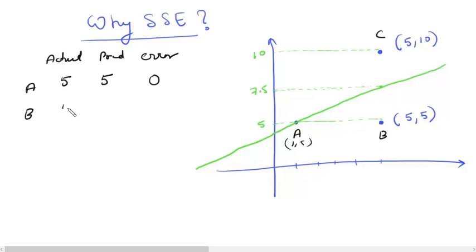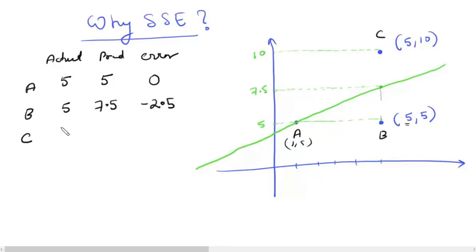For point B, the actual value of the dependent variable is 5. The predicted value corresponding to x-coordinate 5 on the line is 7.5, so the error — actual minus predicted — is minus 2.5. For point C, the actual value is 10 and the predicted value is 7.5 again, so the error is plus 2.5.